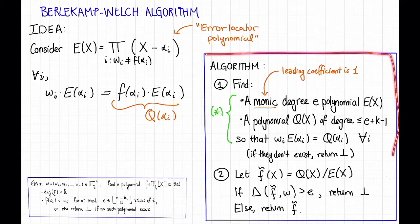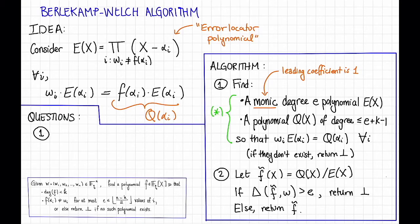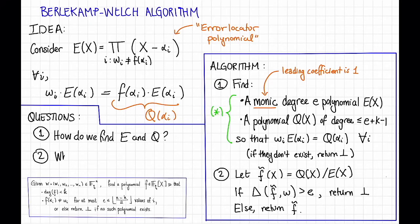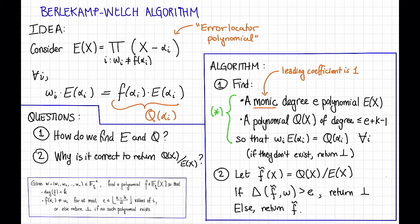So this is the Berlekamp-Welch algorithm. At this point, you might have a few questions. Our first question is: how do we do step one? How do we find these polynomials if they exist? The second question is: why is this a good idea? That is, why is it correct to return Q divided by E? If we got lucky and happened to pick Q and E as per our intuition, then this is a good idea. But what if we picked some other Q and E? Why should that Q divided by that E give us the right answer?